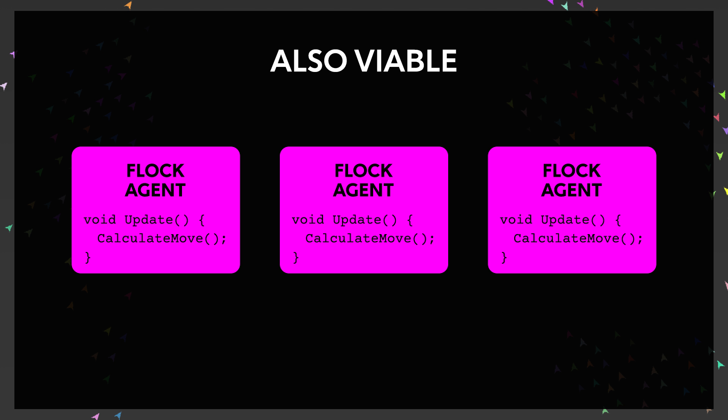With Unity, it would be possible to define the flocking behaviors within the agents themselves, using the update method as the iterator. In other words, each agent will trigger its behavior each frame.